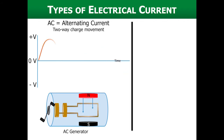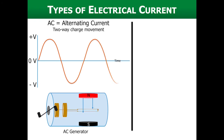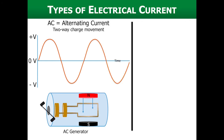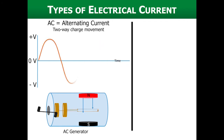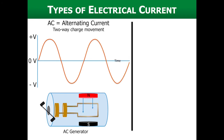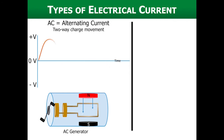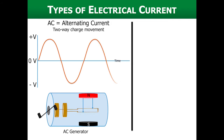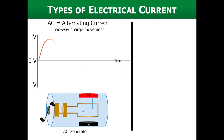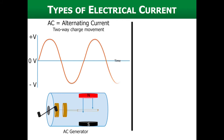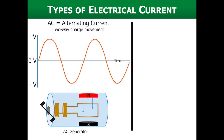That movement of electricity is our alternating current. You can see that red line being drawn — voltage goes up, voltage goes down, up and down — that's our sine wave, created by the spinning motion of our generator. The blue line shows time. In the United States, our electricity is generated at 60 hertz, so we have 60 complete sine wave cycles per second — up to positive, down to negative, back to zero — and that is determined by how fast our generator is spinning.